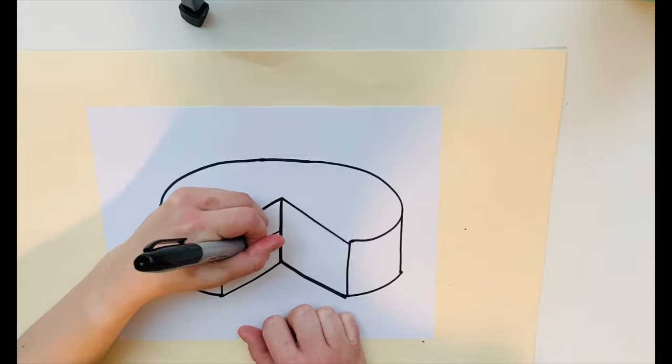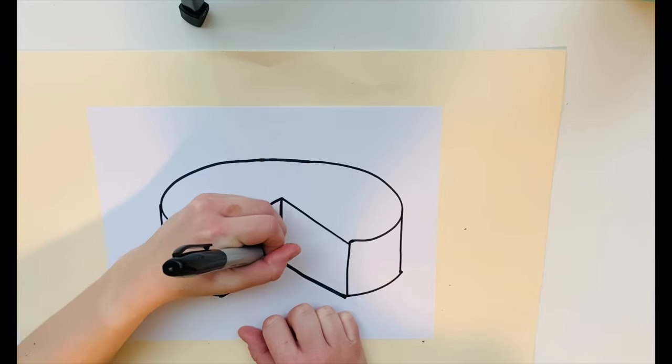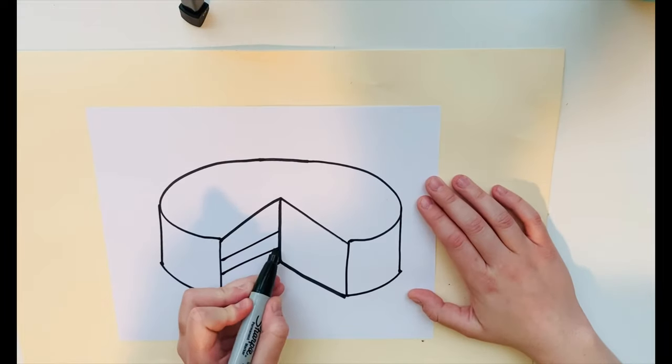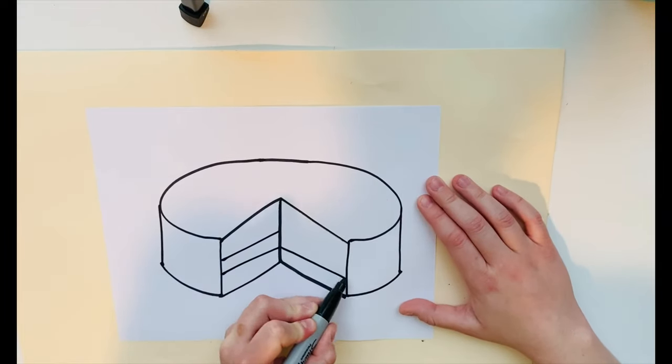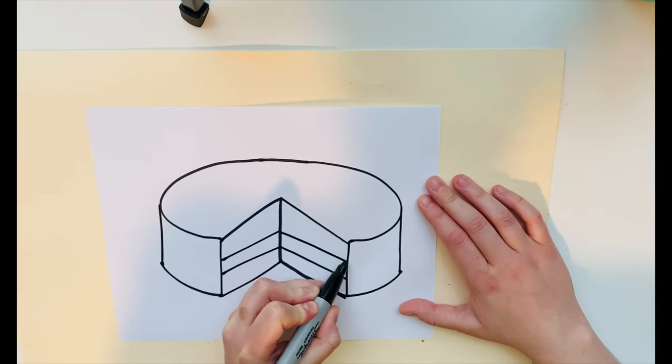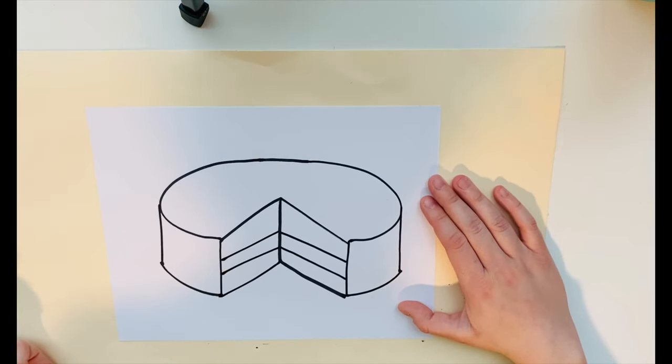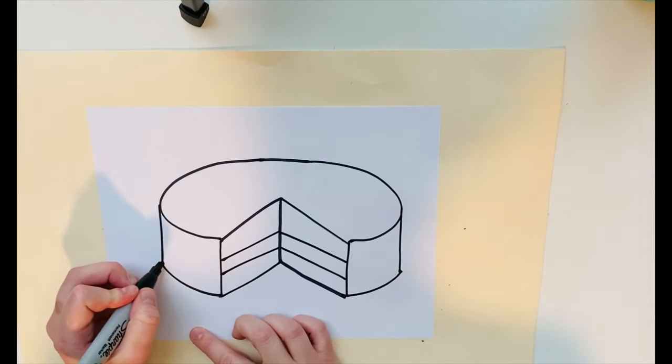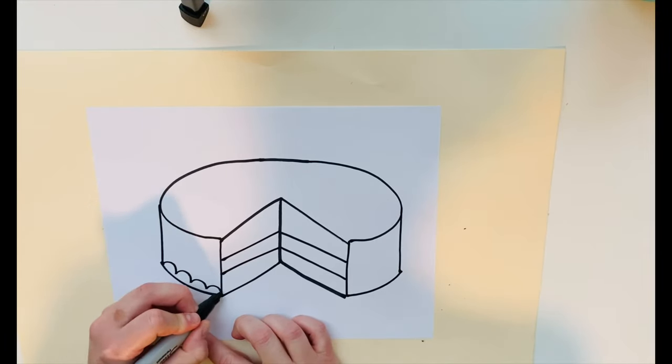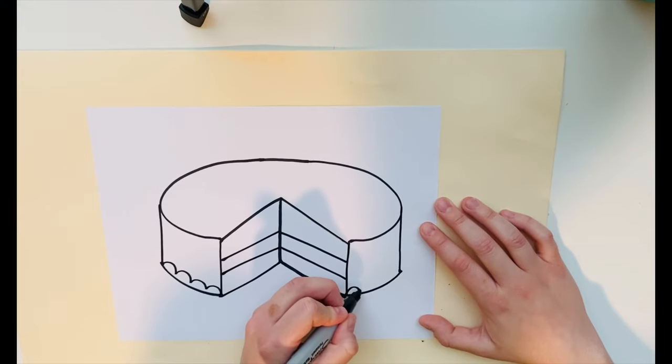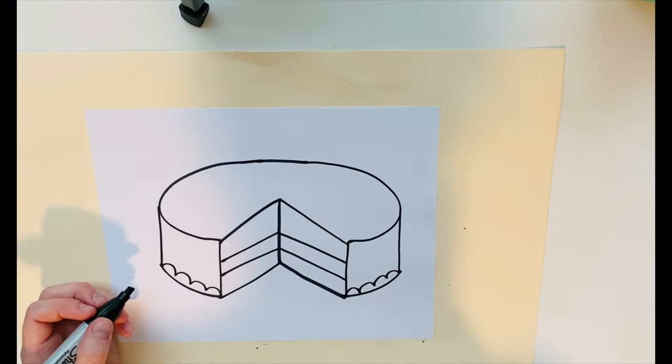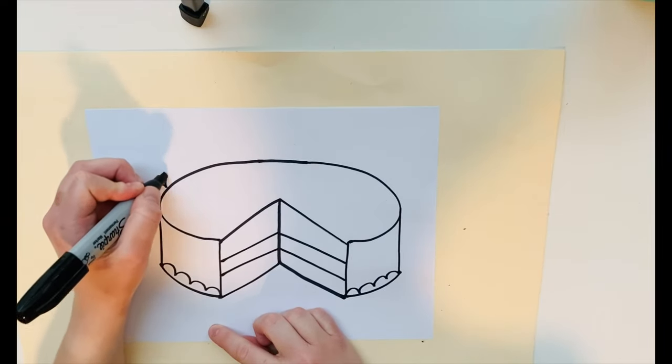Now I'm going to draw two parallel lines on the inside of the cake to show the icing and the layers of the cake. Here I'm going to draw some curved lines, bumpy lines, to show the icing and decorations on the cake as well.